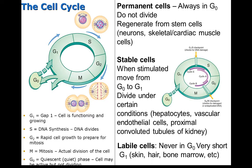Stable cells are ones that normally stop dividing when growth ceases; however, these cells are capable of regeneration when confronted with the appropriate stimulus. When that happens, they'll go into the cell cycle and move from G0 into G1. These stable cells include the parenchymal cells of the kidney, the liver, some smooth muscle cells of the gut, and vascular endothelial cells.